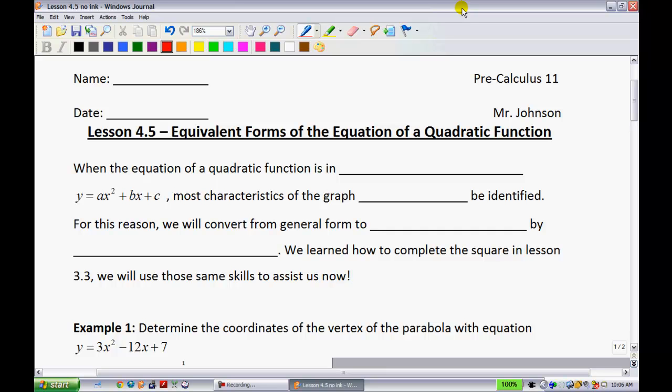In the last lesson, 4.4, what you would have learned is that when things are in standard form, the y equals a onto x minus p all squared plus q, it's a little bit easier to interpret the graph and to gather characteristics from it. So, let's get started.